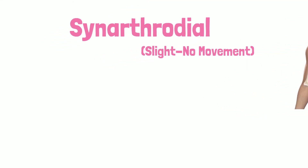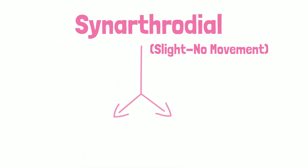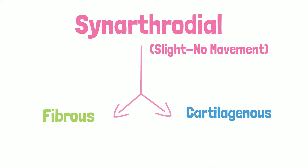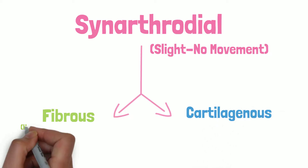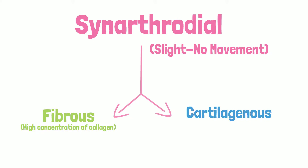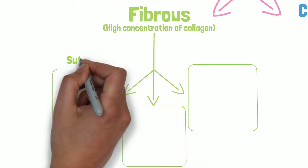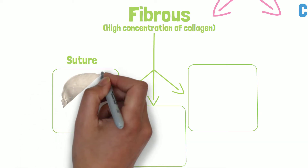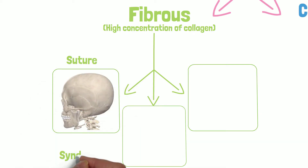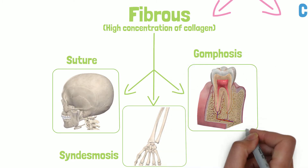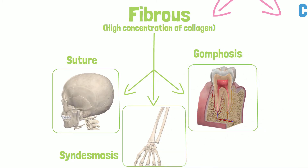Let's take a look at synaphrodial joints first. There are two types: fibrous and cartilaginous. Fibrous joints are stabilized by dense connective tissue, usually with a high concentration of collagen. The three examples of fibrous joints are the skull sutures, radial ulnar joints often referred to as syndesmosis — a joint stabilized by an interosseous membrane — and gomphosis, a joint anchoring the tooth to the tooth socket.